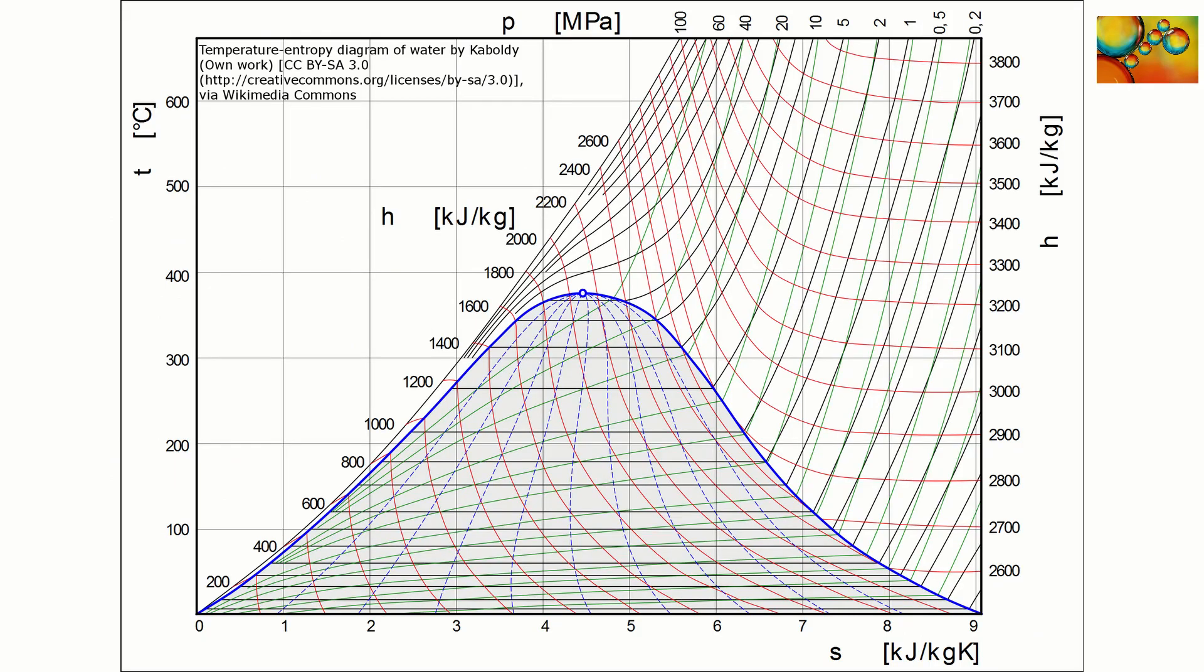This is the temperature entropy diagram of water. Observe that the horizontal axis is for the entropy and that the vertical axis is for the temperature.